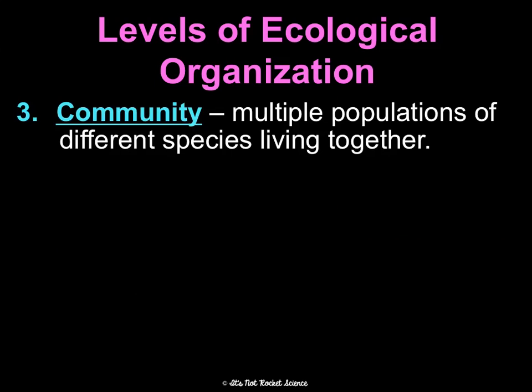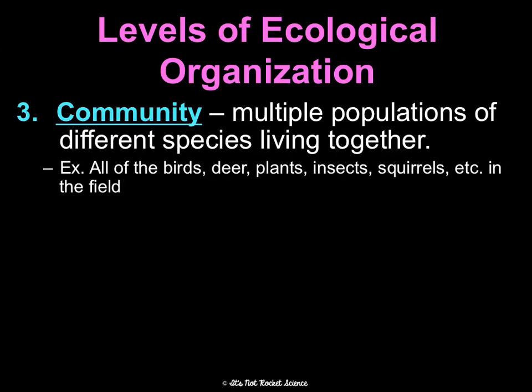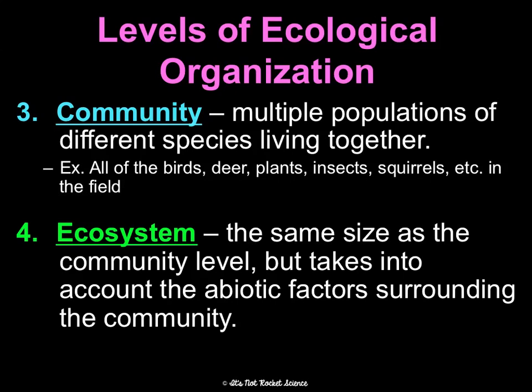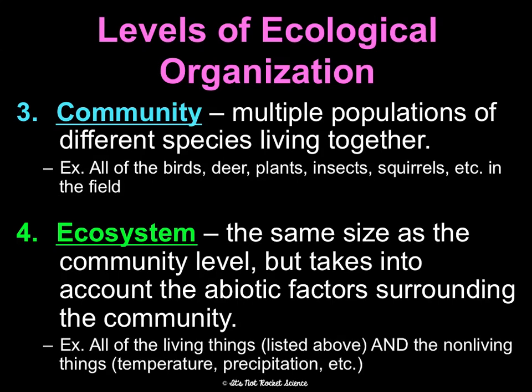Third is the community level — all of the populations of different species living together in the same place. All the birds, deer, plants, insects, squirrels, and bacteria in a field make up a community. The next level is the ecosystem — the same community plus all the non-living, abiotic factors like temperature, precipitation, and natural disasters.